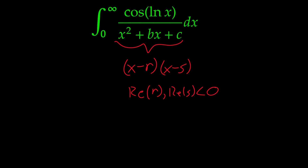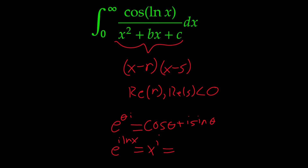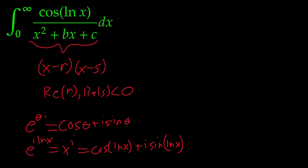Let's turn our attention to the numerator. This was inspired by Maths 505 — we love Kamal. For the numerator, if we look at Euler's identity: e^(θi) = cos θ + i sin θ. Letting θ = ln(x), we get e^(i·ln x) = x^i = cos(ln x) + i sin(ln x). Taking the real part of x^i gives us cosine of the natural log of x. We could do this with sine, but we're using cosine, which is how Maths 505 did it.